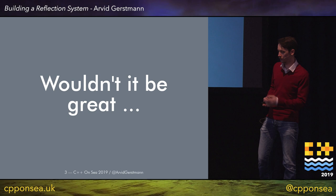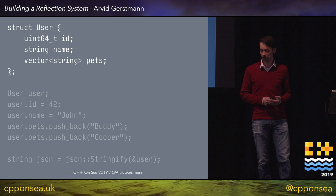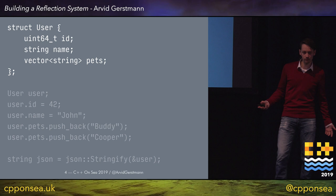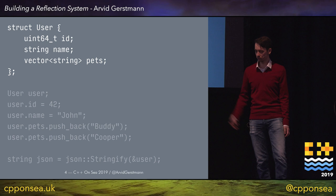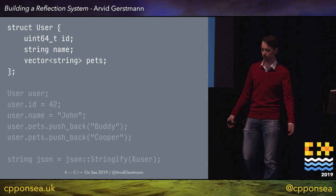This JSON string can be used everywhere. Here's a little code snippet. We start by having the user struct — it's a simple struct with three members: an ID which is a 64-bit integer, a name which is a string, and a vector of strings which is the paths. Next, we create an instance of this struct. We assign an ID of 42, he's called John, and he has two dogs, Buddy and Cooper, and we push them back into the vector.